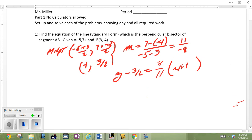Midpoint, here it is, negative 1, 3 halves. Slope, 11 over negative 8. Perpendicular slope, 8 over 11. Point slope form, y minus y1 equals slope times x minus x1. There it is.